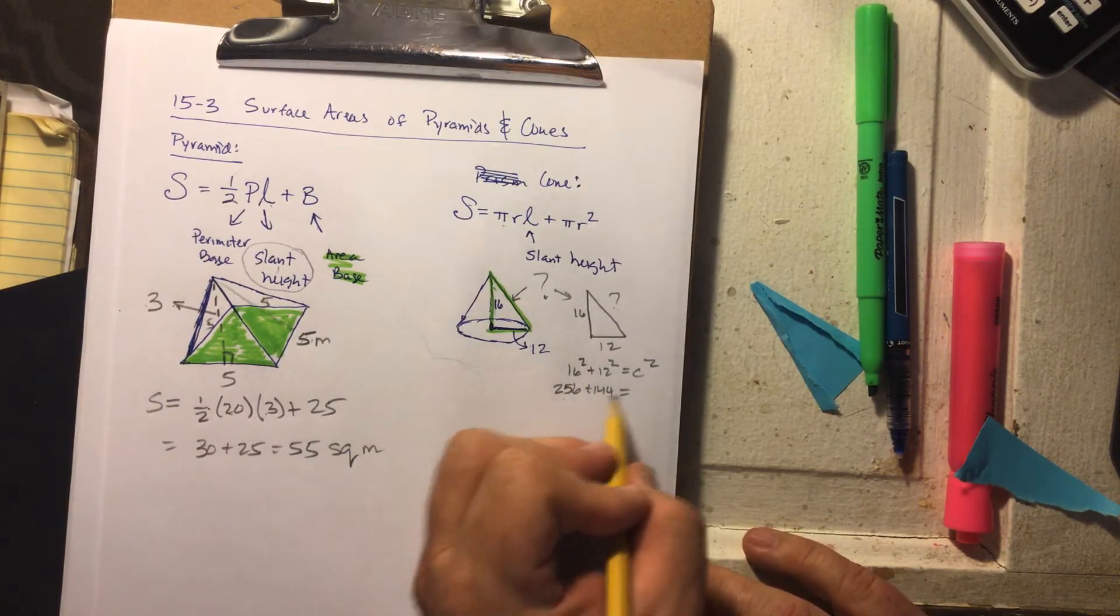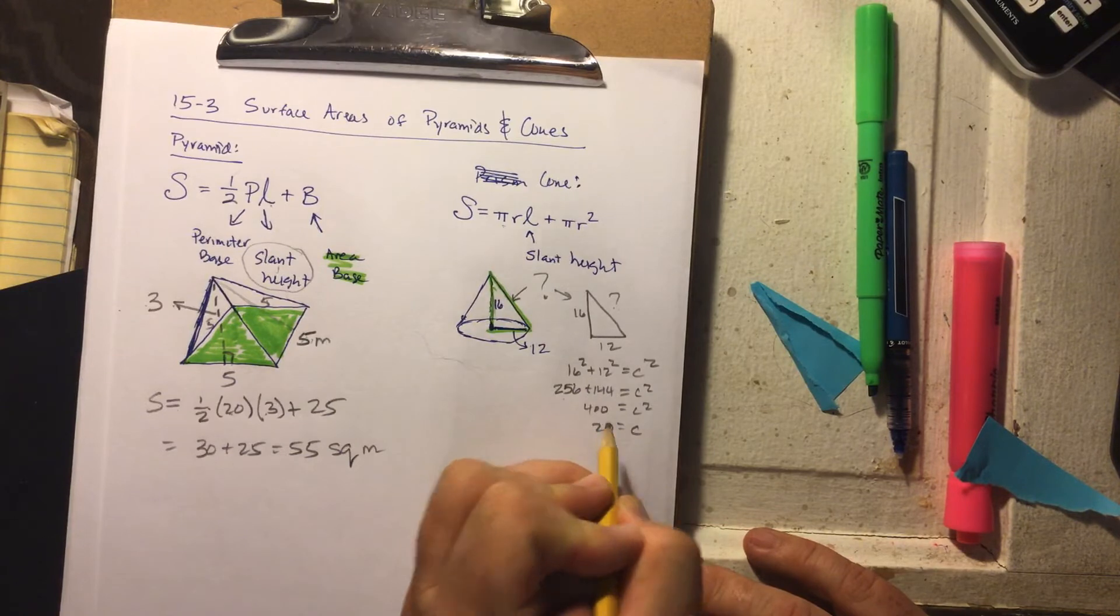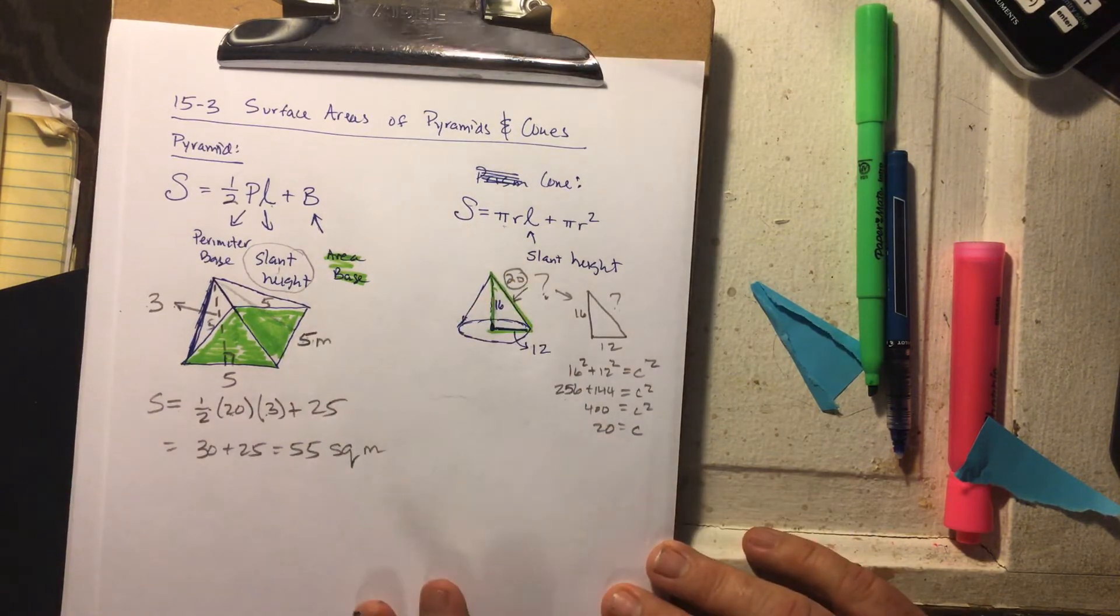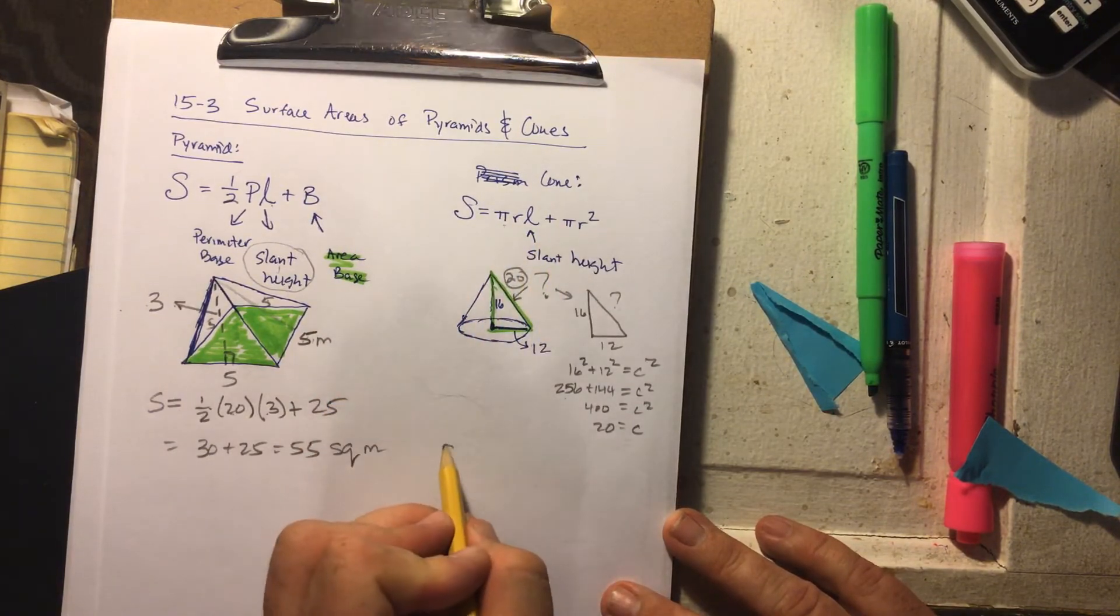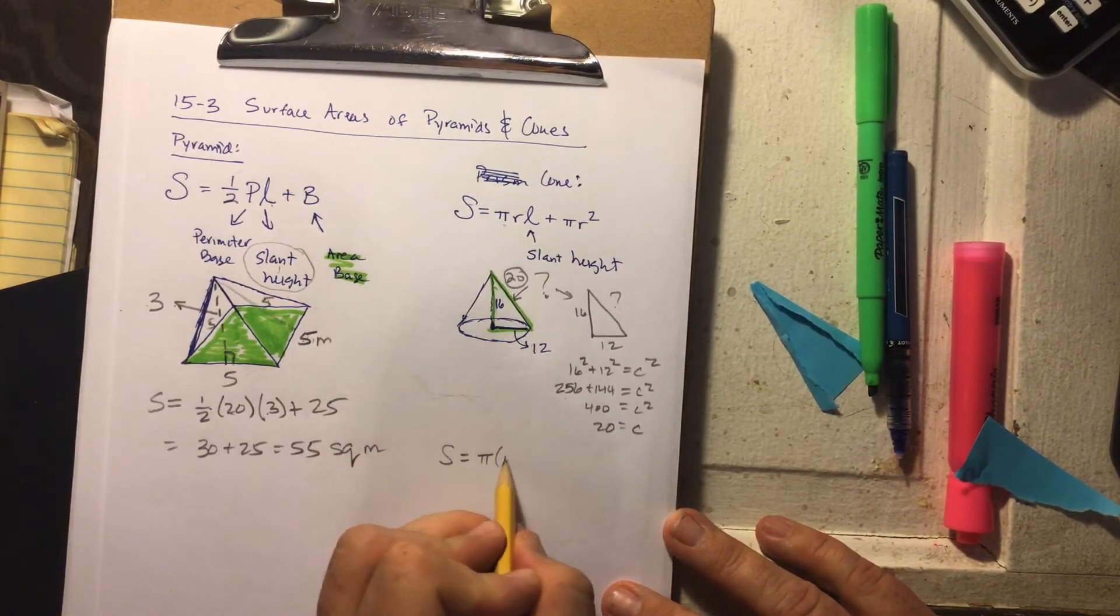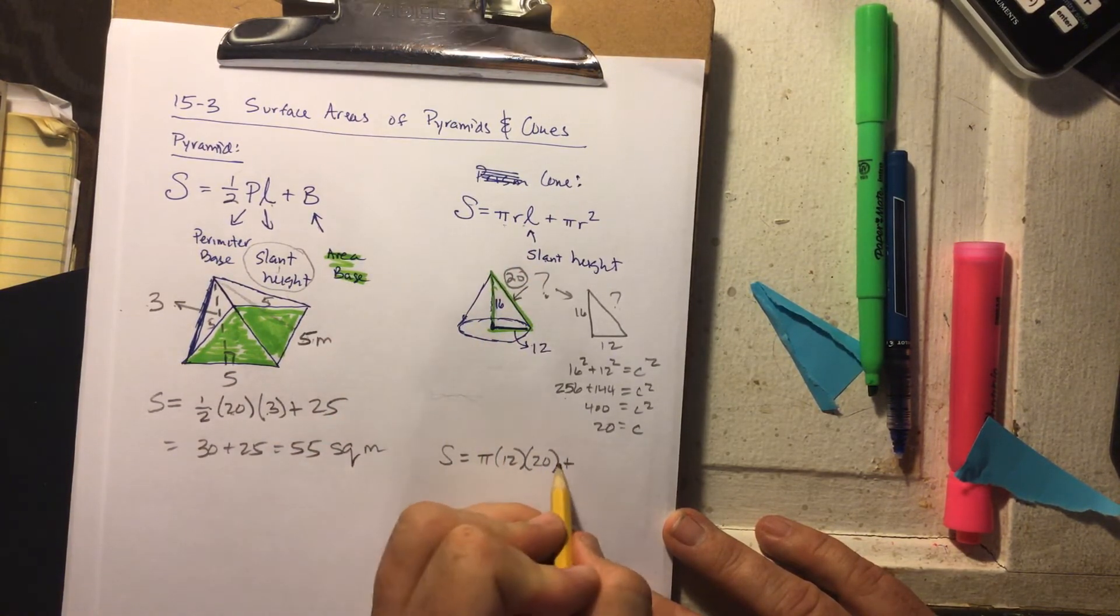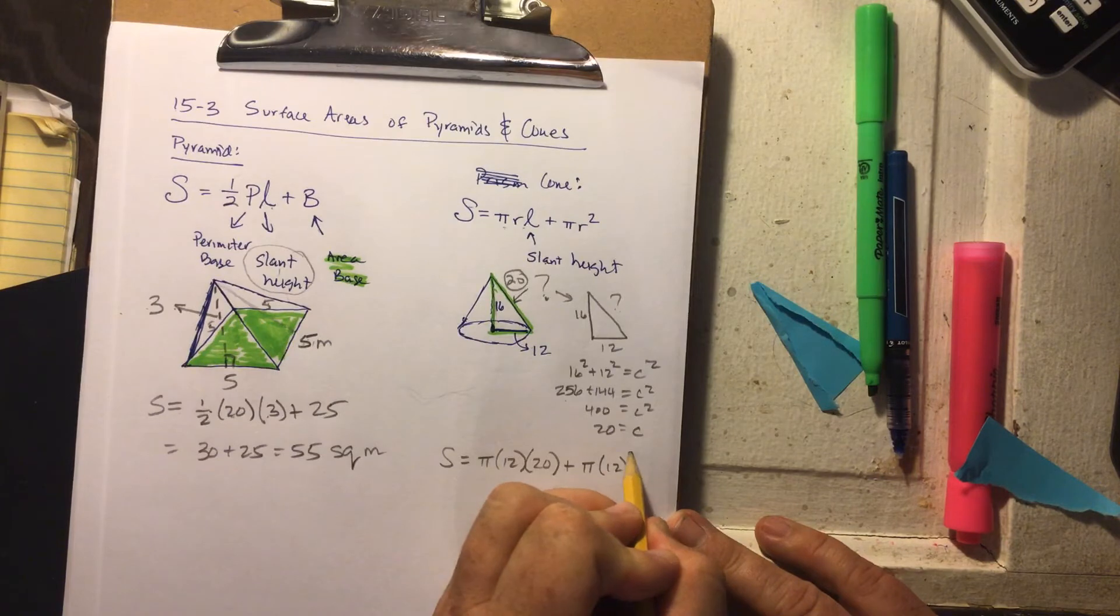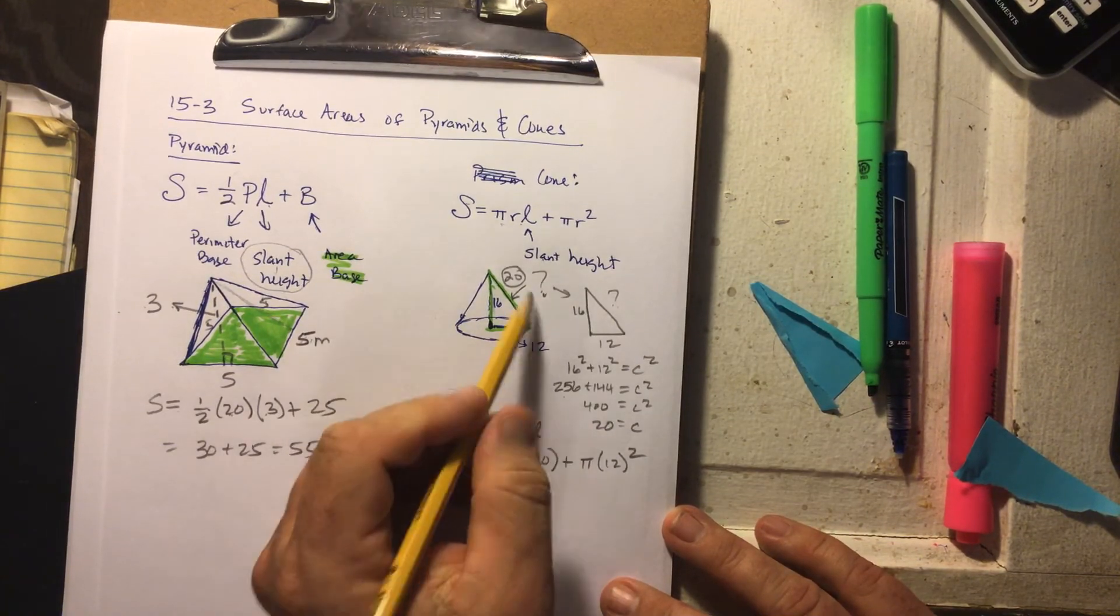256 plus 144 equals c squared, so that would be 400 equals c squared, c equals 20. Well c is actually my slant height, so now I know that this is 20. So then I start plugging things into the formula. Best part about surface area is all the formulas. We have pi, what's my radius? 12. What's my slant height? I just figured it out, it's 20. Plus my area of the base, what's the base? Pi times r squared.